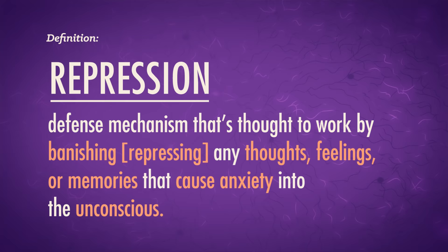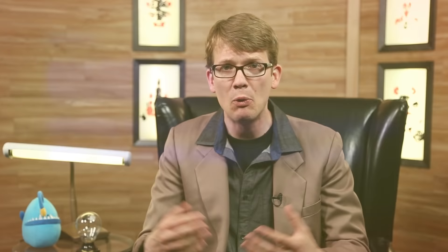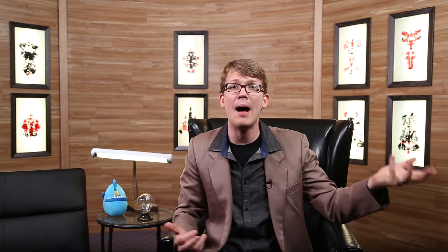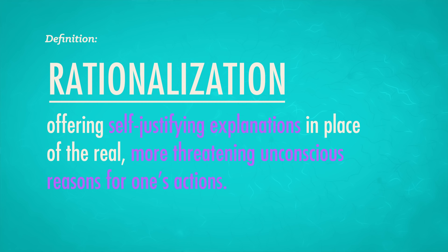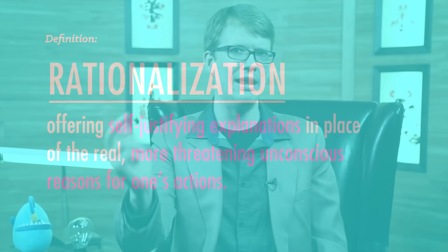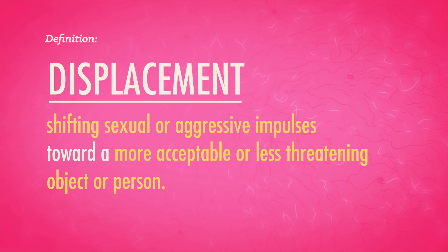You might already have heard of repression — the defense thought to work by banishing any thoughts, feelings, or memories that cause anxiety to the unconscious. Freud thought repression allows our many other defense mechanisms to do their work. Regression involves a retreat to a more infantile psychosexual stage, like when a second grader sucks their thumb when they're nervous. Reaction formation involves flipping unacceptable impulses — like the desire to punch someone in the face — with their opposites, like offering them cookies with a fake smile. Projection is when you disguise your own impulses by attributing them to other people. And rationalization is when we offer explanations and excuses for our behaviors instead of getting to the real unconscious reasons — like, 'I ate six Hot Pockets at the party just because I was being social.'